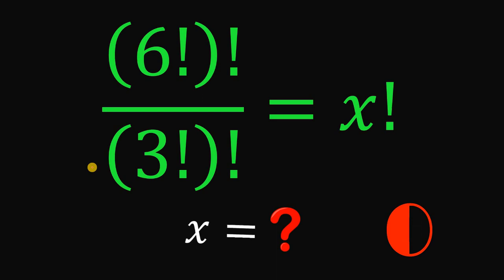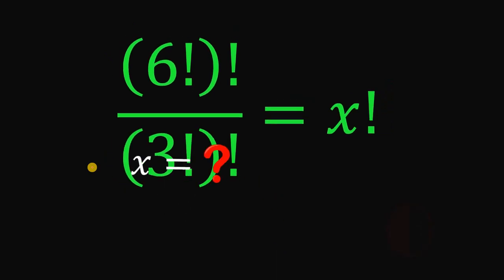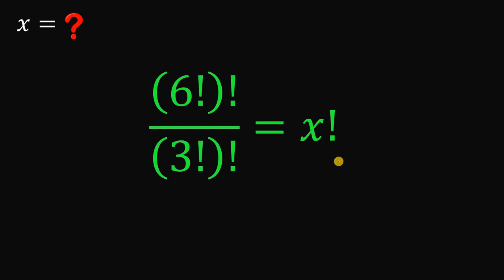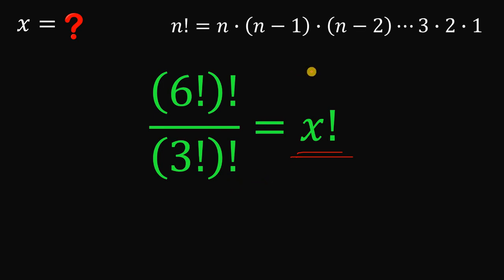Now let's answer this question together. The main goal is to solve for the value of x that satisfies the equation 6 factorial factorial over 3 factorial factorial. To answer this, we're going to first recall what a factorial is. n factorial equals n times n minus 1 times n minus 2, all the way up to 3 times 2 times 1 — the product of all natural numbers less than or equal to n.